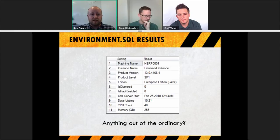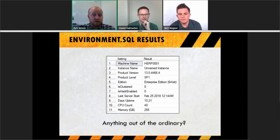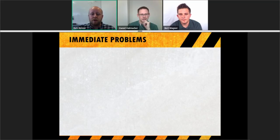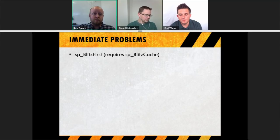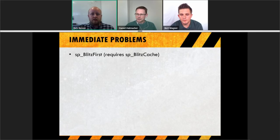Ask yourself if there's an immediate issue — are they running Web Edition or Standard Edition, which won't utilize all the cores? Now you know what you're working with; let's look at what's happening. In the First Responder Kit — available at firstresponderkit.org or GitHub — we start with sp_BlitzFirst. One prerequisite: you need sp_BlitzCache installed first. Both are SQL scripts; run them on your server and they'll install as stored procedures.